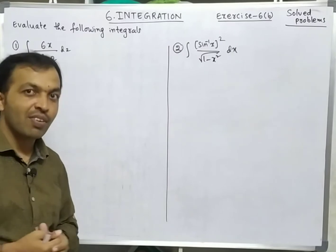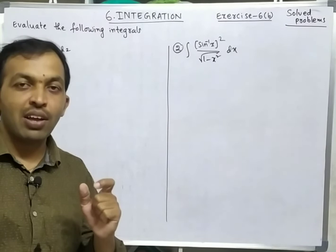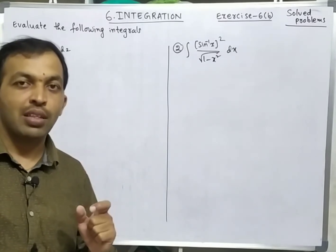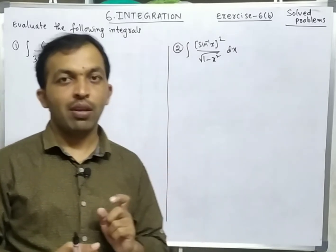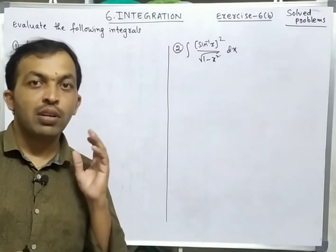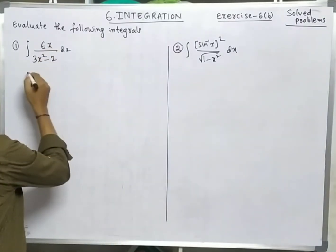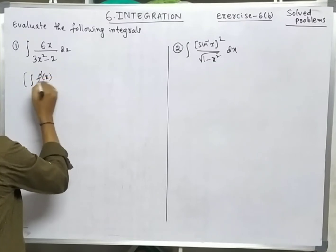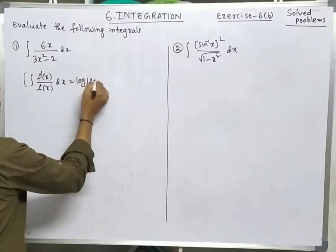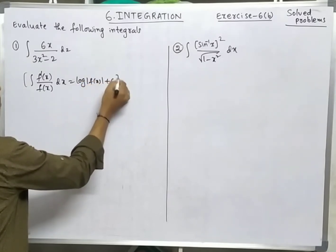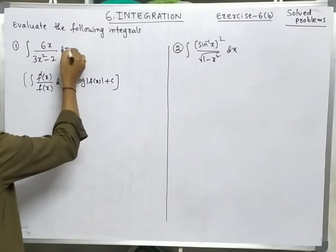Did you observe any logic in that one? The logic is: integration of f'(x)/f(x) dx equals log|f(x)| + c. Here we can observe that the derivative of the denominator is the numerator. Derivative of the denominator (3x² - 2) is the numerator.